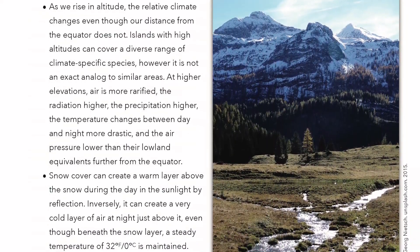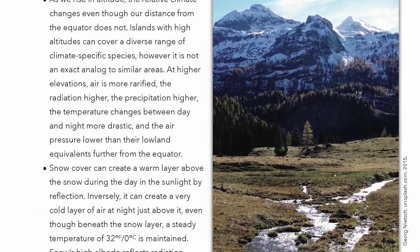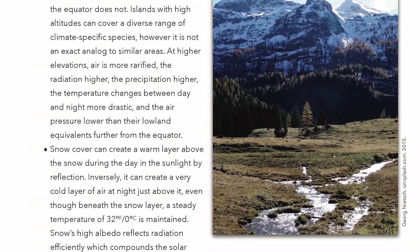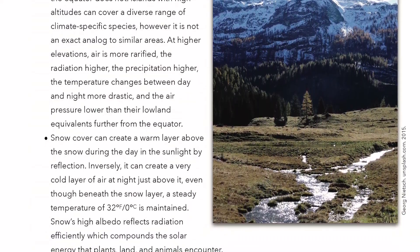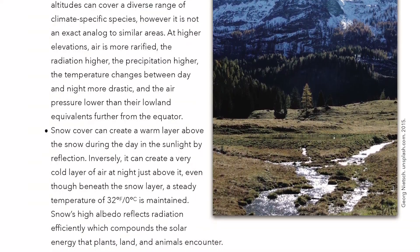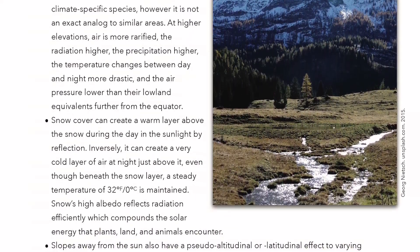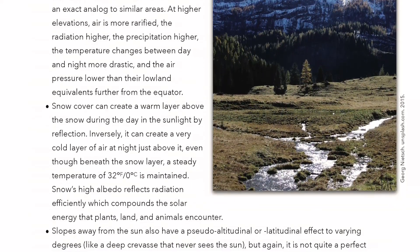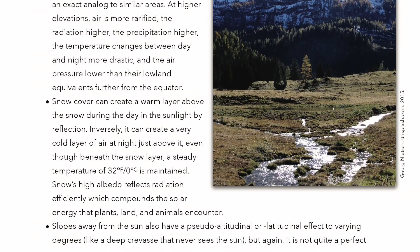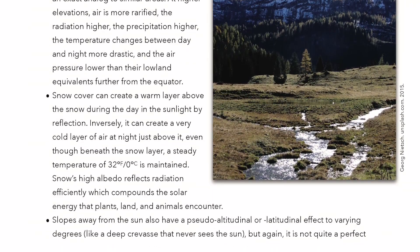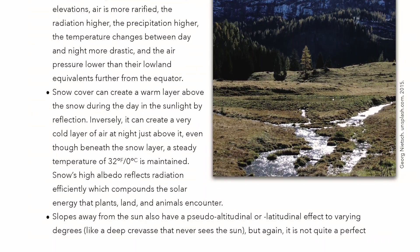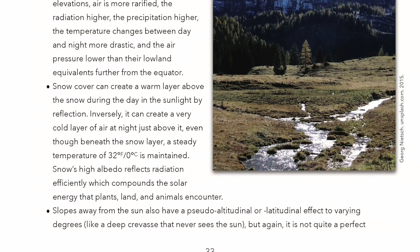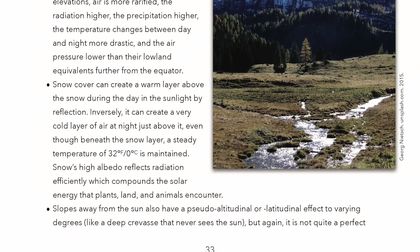Snow cover can create a warm layer above the snow during the day in sunlight by reflection. Inversely, it can create a very cold layer of air at night just above it, even though beneath the snow layer a steady temperature of 32°F or 0°C is maintained. Snow's high albedo reflects radiation efficiently, which compounds the solar energy that plants, land, and animals encounter. Slopes away from the sun also have a pseudo-altitudinal or latitudinal effect to varying degrees, like a deep crevasse that never sees the sun.